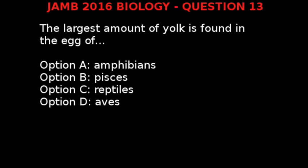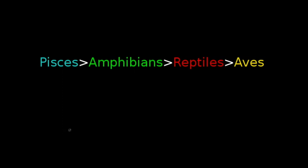To answer this question we look at evolutionary trends and the organization of life. From the theory of evolution, life began in water. Therefore we have Pisces, which include fishes and all aquatic animals, followed by amphibians which partly live on land and partly in water, then reptiles which live mainly on land, and finally Aves which includes all the birds.